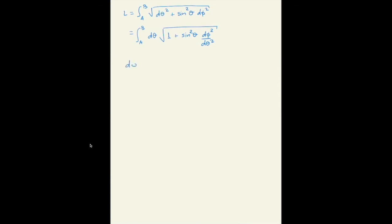Immediately in here you can see that this integral is going to be minimized when you have d phi equal to zero. So already you see here L is minimized when d phi is equal to zero. What does that mean?